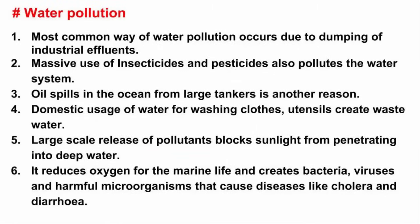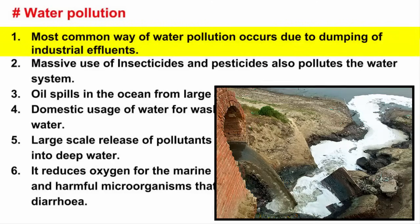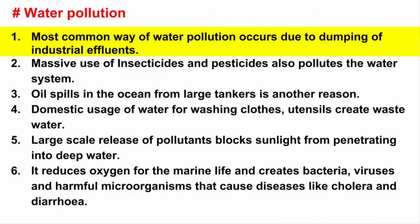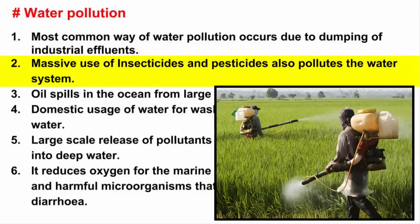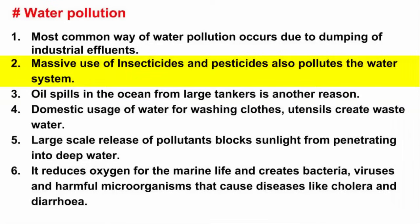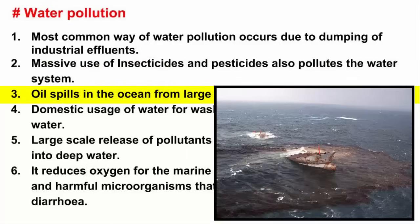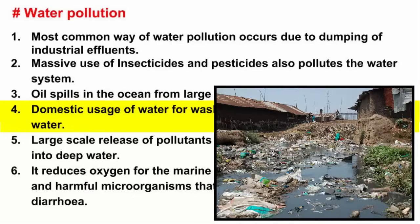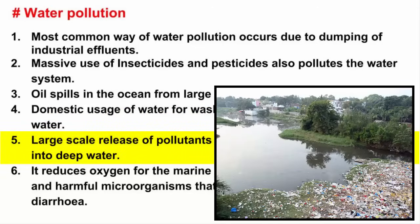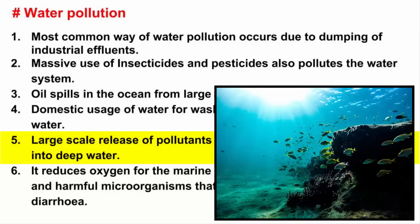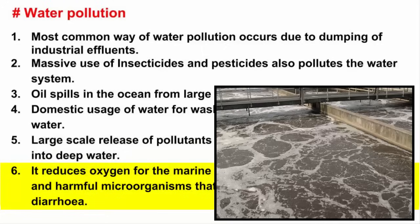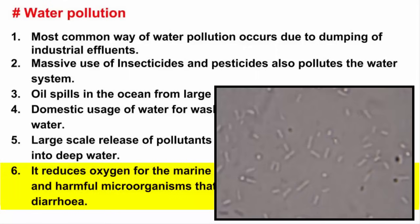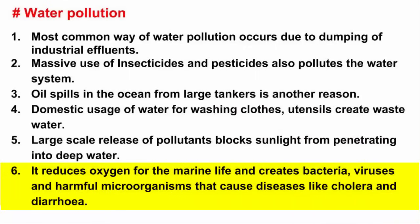The second one is water pollution. Every living being on earth depends on water for its survival, making water pollution another major type of pollution. Industrial effluent dumped into rivers and seas is the most common way water gets polluted. The massive use of insecticides and pesticides by the agricultural community is also polluting ground and water systems. Oil spills in the oceans by heavy tankers have caused significant damage to water bodies. Washing clothes and utensils creates wastewater, and without proper sewage treatment, this wastewater is released directly into ponds and lakes. When large-scale pollutants are released into water, they block sunlight from penetrating, reduce oxygen for marine life, and introduce new bacteria, viruses, and microorganisms that cause waterborne diseases like cholera and diarrhea.